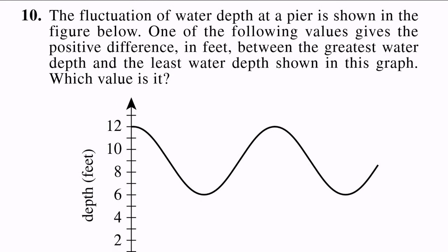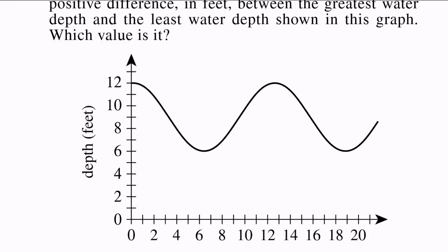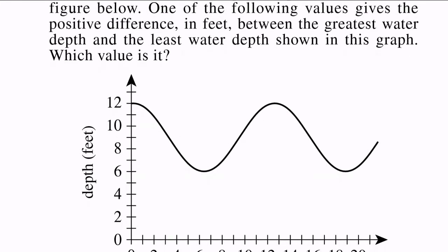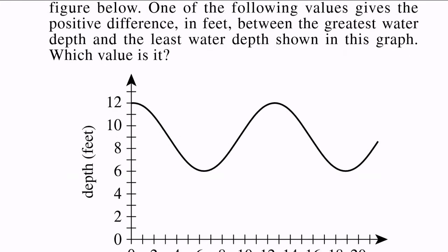Finally moving on to number 10. The fluctuation of water depth at a pier is shown in the figure below. One of the following values gives the positive difference in feet between the greatest water depth and the least water depth shown in this graph. Which value is it? So this is a question that can be kind of weird when you read it. You're not really sure what they're asking, but they're really just asking what is the value of the difference between the greatest and the least water depth.